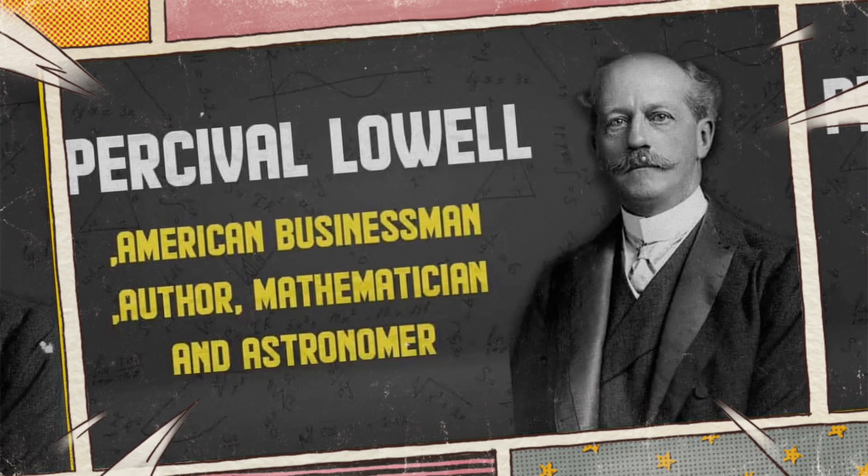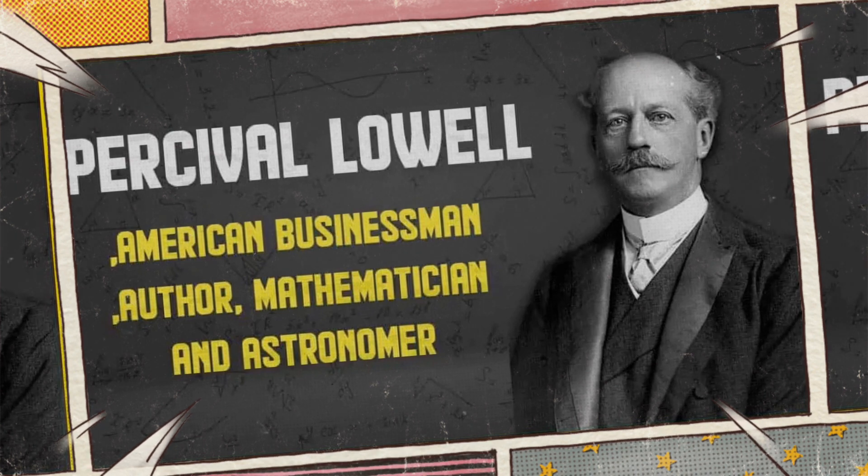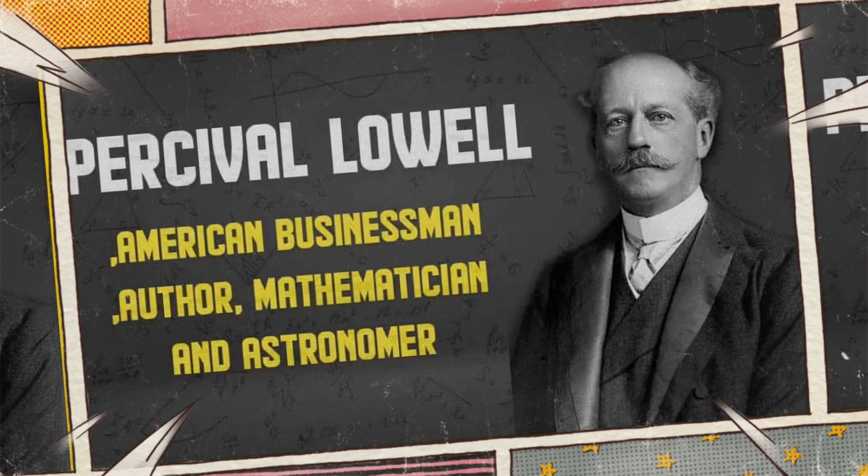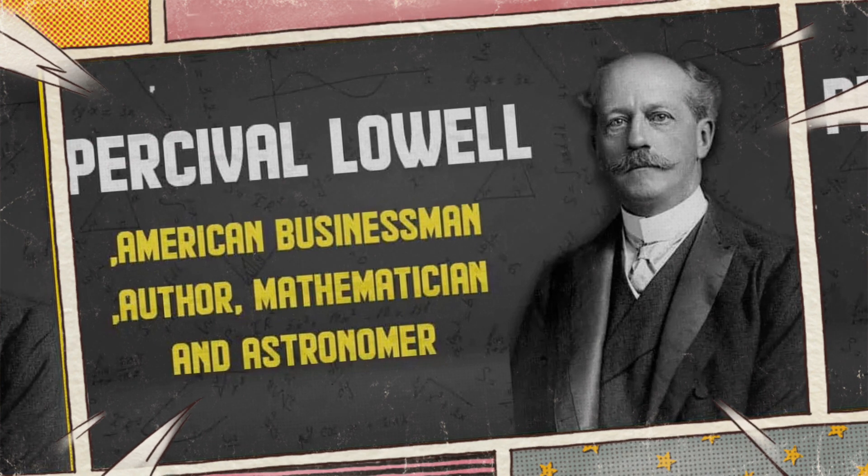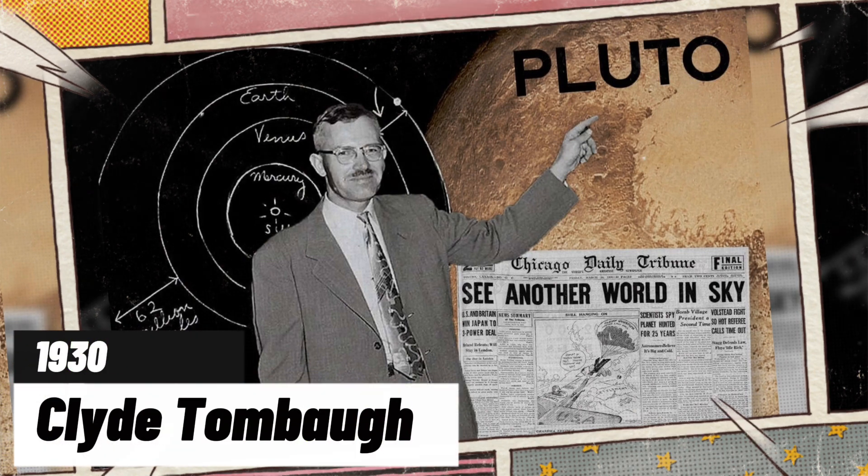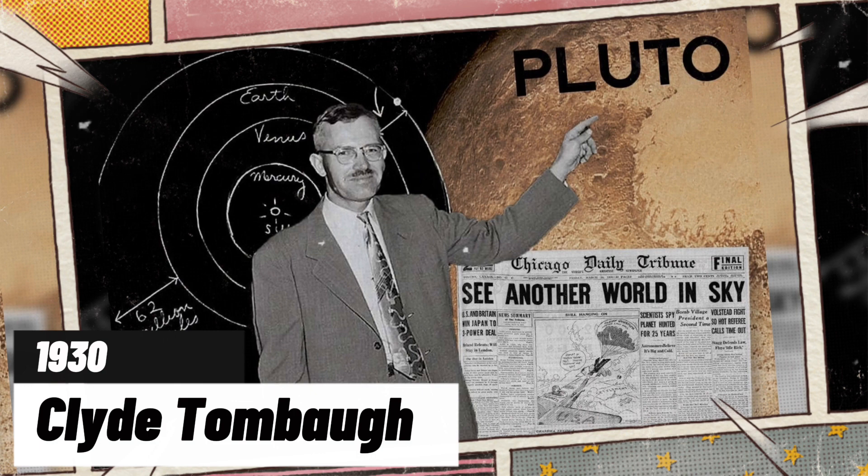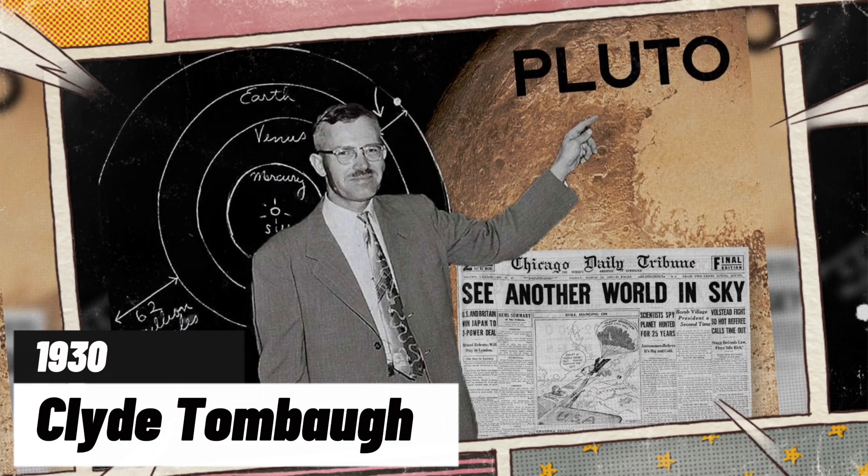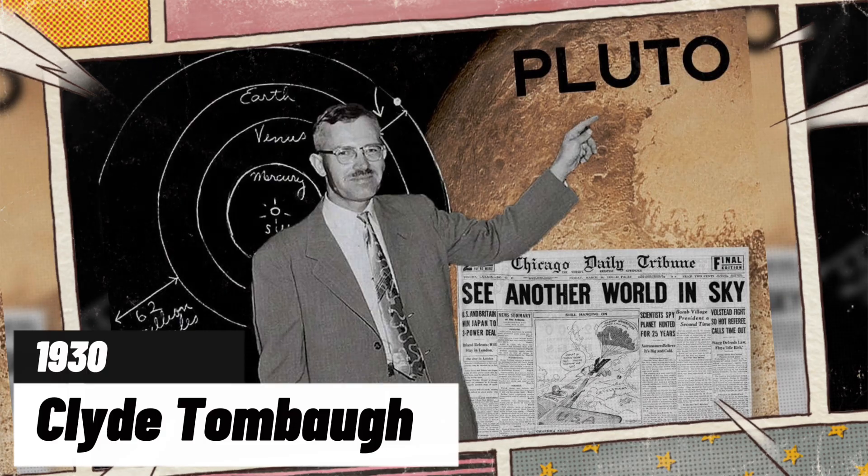Pluto's celestial journey traces back to 1905 when Percival Lowell, an American astronomer, first suggested its existence driven by anomalies in the orbits of Uranus and Neptune. Lowell's prediction in 1915 set the stage for Pluto's eventual discovery in 1930 by Clyde Tombaugh, an astronomer at Lowell Observatory. Tombaugh's find validated Lowell's theories and those of other astronomers.